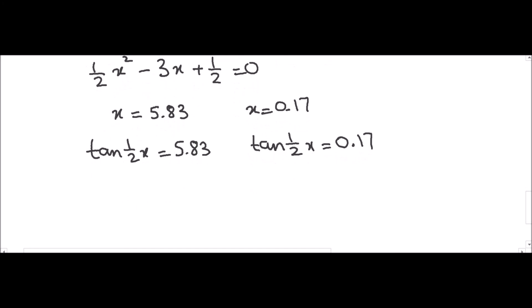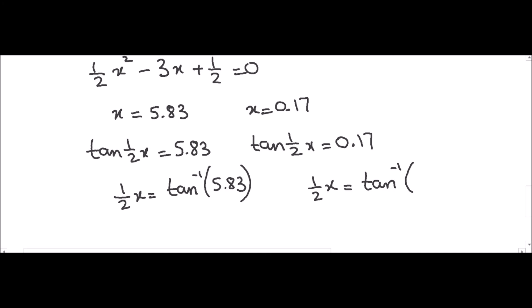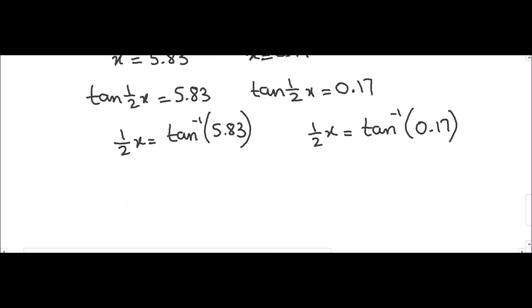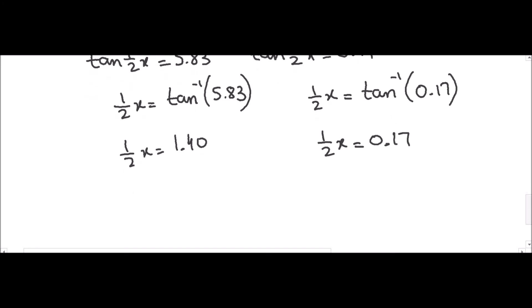Now we find x. For tan(½x) = 5.83: ½x = tan⁻¹(5.83) ≈ 1.40, so x ≈ 2.8. For tan(½x) = 0.17: ½x = tan⁻¹(0.17) ≈ 0.169, so x ≈ 0.337. These are the two solutions for the x-coordinates of the stationary points.